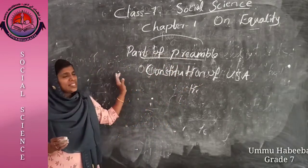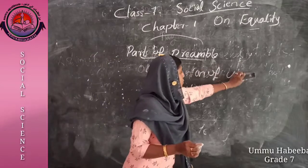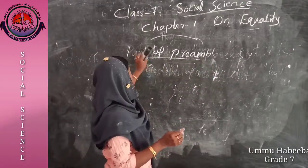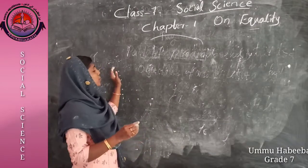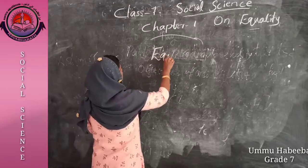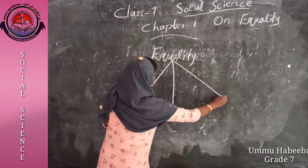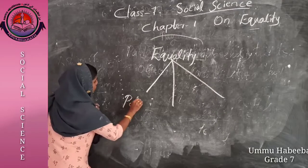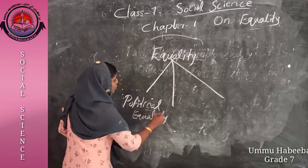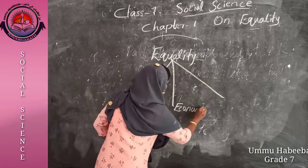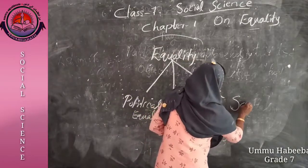So these are the things we dealt with in today's class. To conclude: what is equality, what are its parameters, and from which part equality is taken. The three parameters we discussed are: first, political equality; second, economic equality; third, social equality.